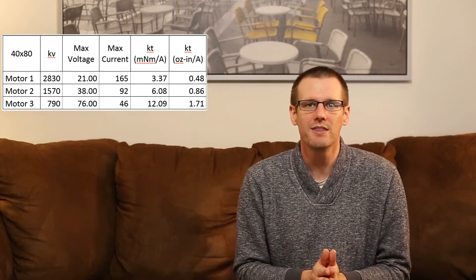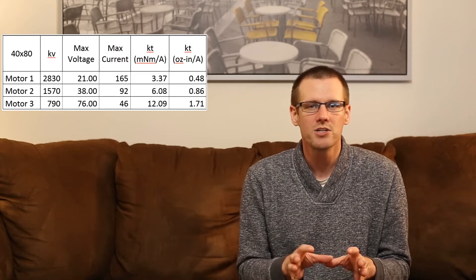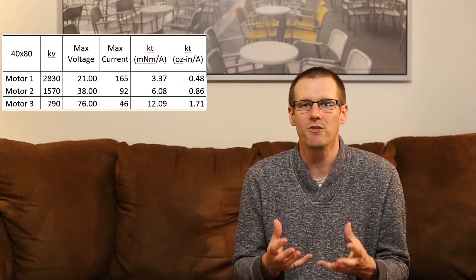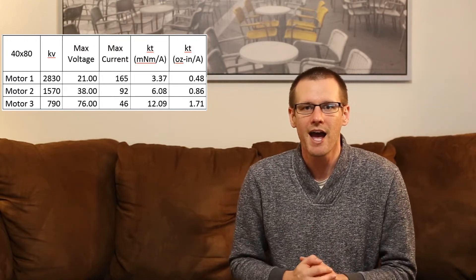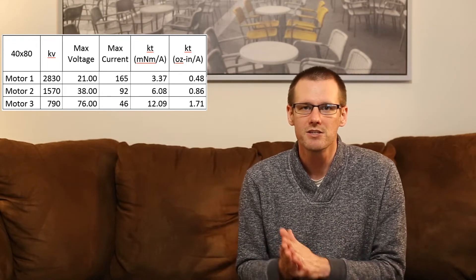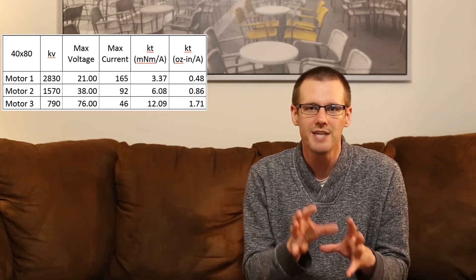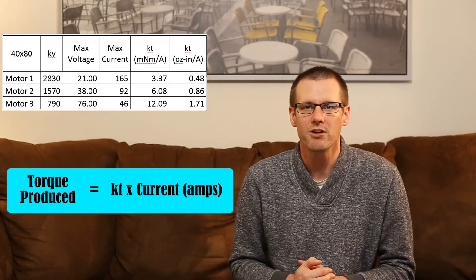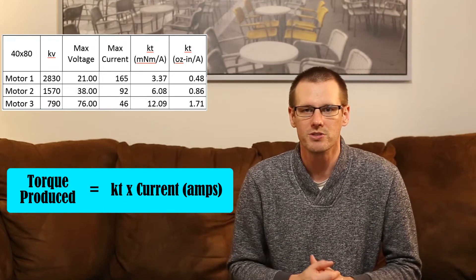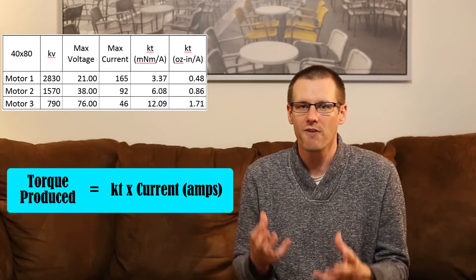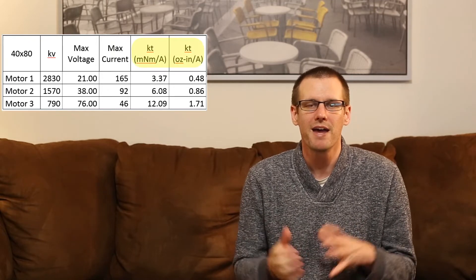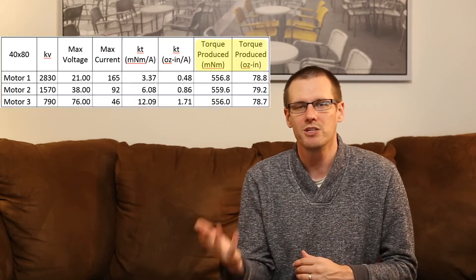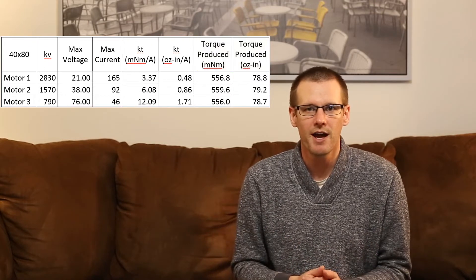Now we talked about how we get the KT value. We're not interested in the KT value. We want to know the actual amount of torque that I can get out of those motors. I want to know how much metal I can twist in my RC application. So in order to look at that, I have to go to the torque produced. In order to get torque produced, it's great. All I take is the KT value, I multiply it by the current, and I get that overall amount of torque produced in the correct units.